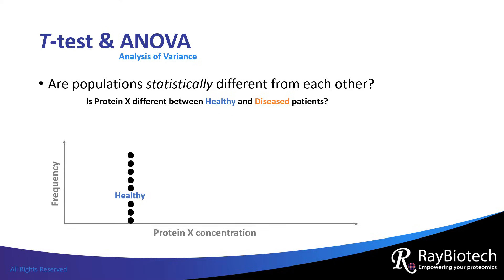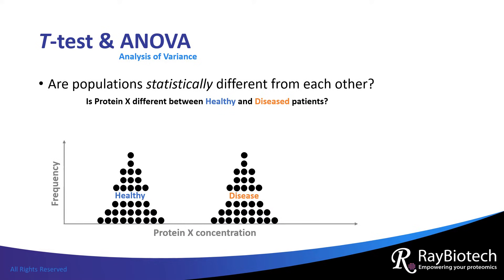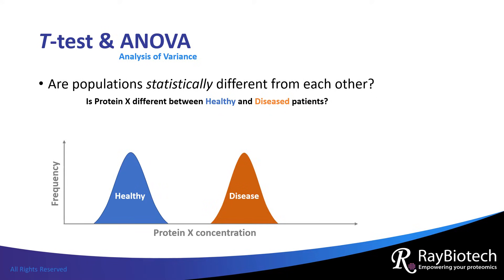In this example, eight healthy individuals have the same concentration of protein X, where each dot represents a patient. If we measure the concentrations of protein X of 34 healthy patients, the distribution would look like this. Imagine that we did the same with the diseased population — these distributions would have these overall structures.